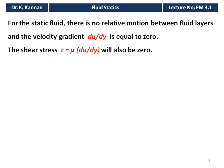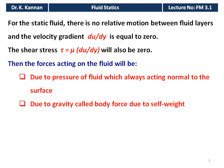Since the velocity gradient du/dy equals zero, the shear stress tau is also zero — tau equals mu times du/dy, which equals zero. The forces acting on the fluid are two: one is due to the pressure of the fluid, which always acts normal to the surface, and the second is the force due to gravity — the body force due to the self-weight of the fluid.